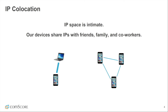IP space is intimate. When connecting to the internet, our devices share IP addresses with family, friends, and coworkers. Public-facing IP addresses are shared by devices that connect to the internet via the same wireless access point. Devices that share an IP address establish an edge in the device graph. Timescales of weeks and months capture habitual behavior, reinforcing edges and identifying true relationships.